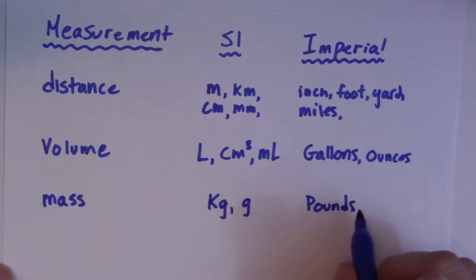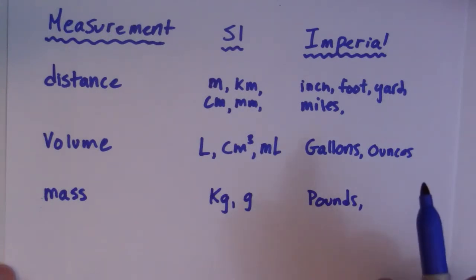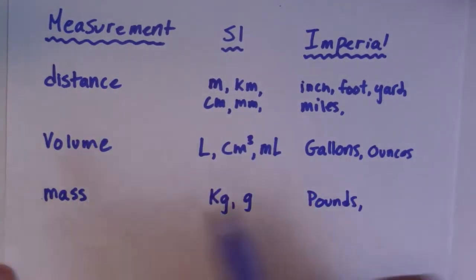I don't know where stones would fall in this thing, but I was watching some British MMA fighting the other night, and the fighters were measured in stones. I don't know if that's imperial, but it was fascinating. So what else do we have? We've got distance, volume, mass.